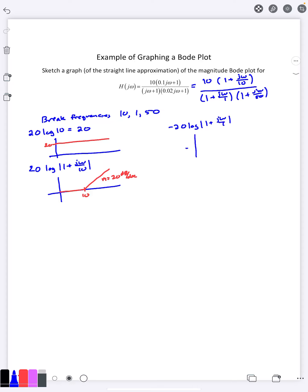So when I look at this graph here, it's going to start out flat as all the 1 plus j omegas do. When it reaches the break frequency of 1, since it's a denominator, it's going to go down at negative 20 decibels per decade.